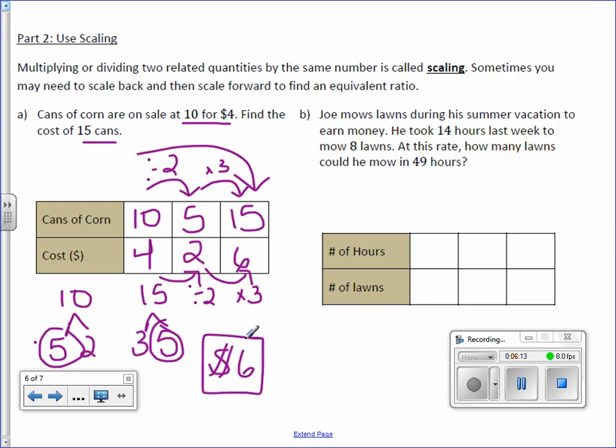Let's look at another one. Joe mows lawns during his summer vacation to earn money. He took 14 hours last week to mow 8 lawns. At this rate, how many lawns could he mow in 49 hours?